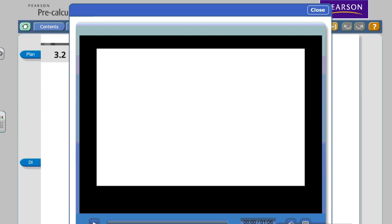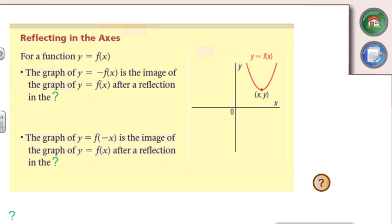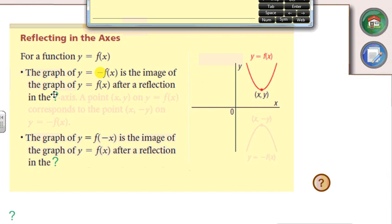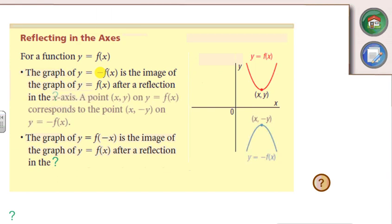Notice the negative x-value. So to bring it all together: if we're starting with our function f of x — any function, doesn't matter if it's quadratic, linear, cubic, radical, or rational — if you take it and you have a negative in front of the f of x, that's always going to be a reflection in the x-axis.